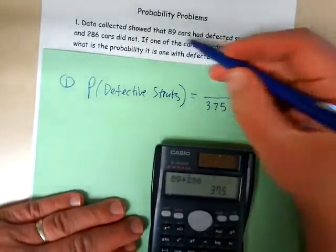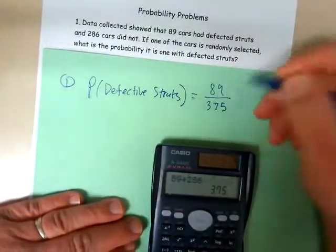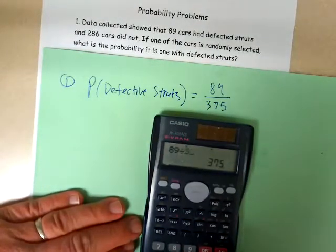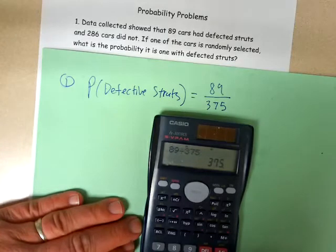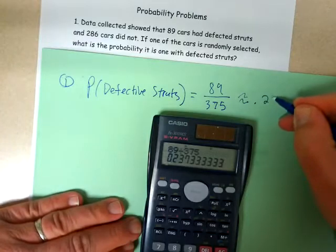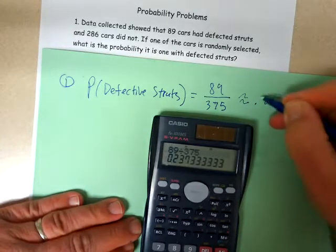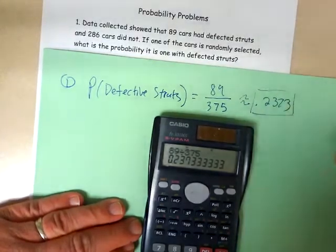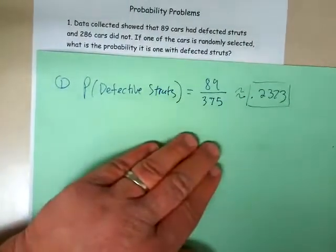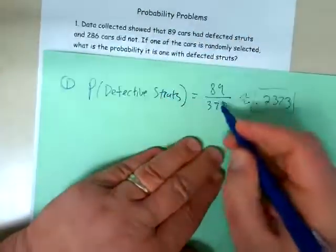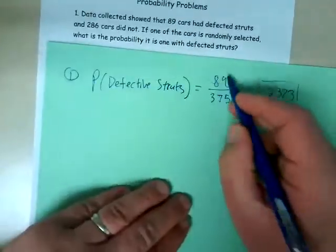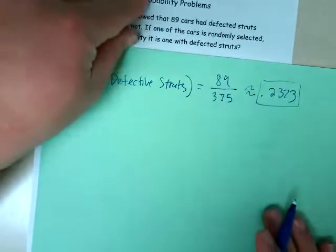How many of those are defective? 89 of them. So I would do 89 divided by 375 and I get approximately 0.2373 if I round to four decimal places. You have to add them together to get the total number on the bottom, and then however many are in the event you want to find the probability of goes on top.